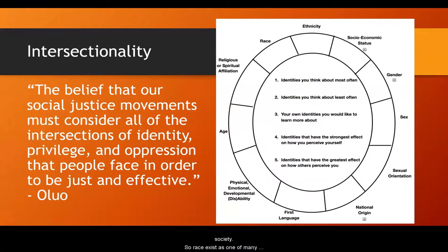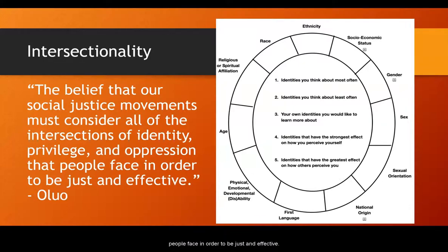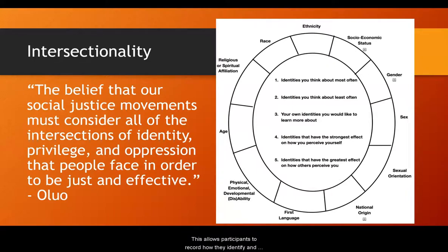Race exists as one of many possible identity issues. Intersectionality is the belief that our social justice movements must consider all intersections of identity, privilege, and oppression that people face in order to be just and effective. To illustrate this, I have included an identity wheel which is often used at cultural sensitivity trainings. This allows participants to record how they identify and which aspects of their identity put them in the dominant group versus marginalized groups.